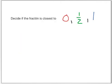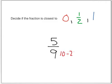So I want you to decide if the fraction I give you is closest to 0, half, or 1. Your first fraction is 5 ninths. Is that closest to 0, half, or 1? Well, I'm thinking 9 is pretty close to 10, and 10 divided by 2 is 5, and that's what I have as my numerator. So I think 5 ninths is closest to a half.